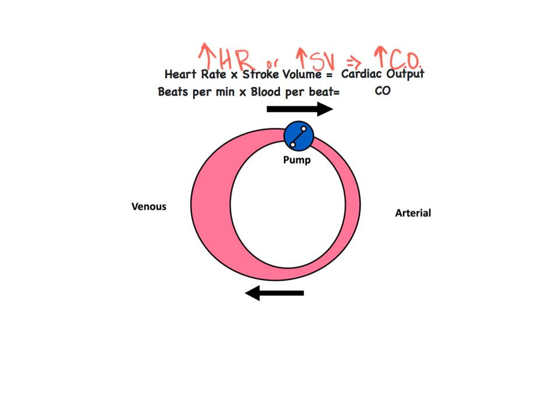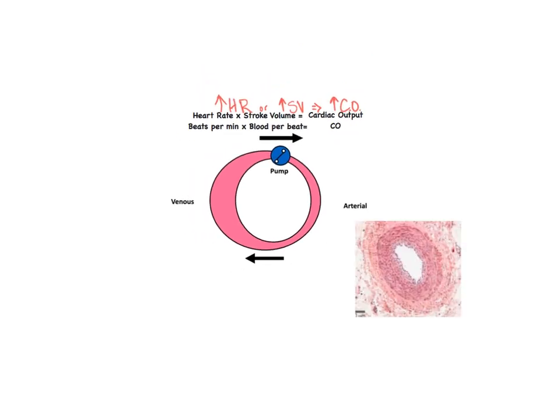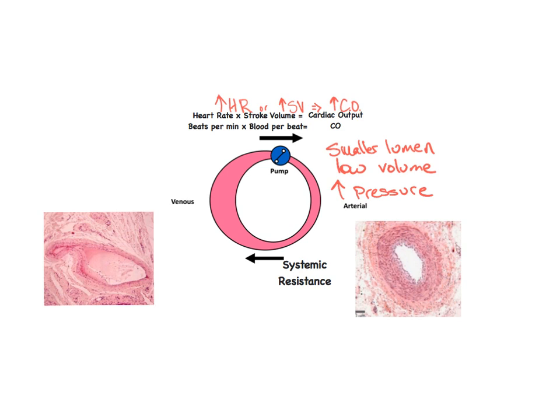The arterial side is quite muscular and largely governs the property of resistance. The artery has a thicker tunica media, or muscular layer, and a smaller lumen that is important for the maintenance of pressure. The veins are thinner, have valves, are compressible, as well as distensible.